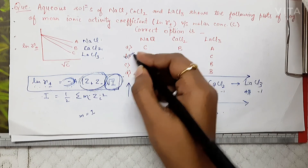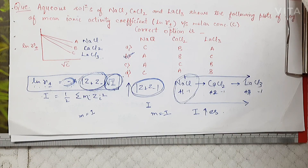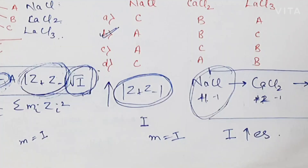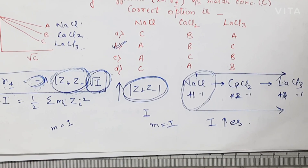That's why the plots for NaCl, CaCl₂, and LaCl₃ are ordered as options a, b, c respectively, and the correct option is option B. I hope your doubt is now clear. That's it for this video — thank you so much for watching.